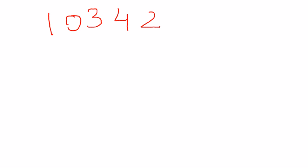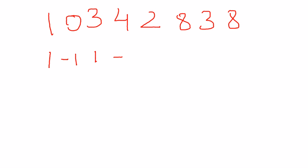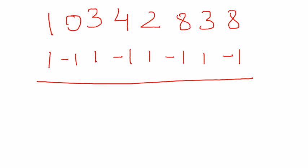Now let's take another example. The number is 1, 0, 3, 4, 2, 8, 3, 8. Writing down the pattern once again: 1, minus 1, 1, minus 1, 1, minus 1, 1, minus 1 — matching each digit of the number with the alternating pattern.